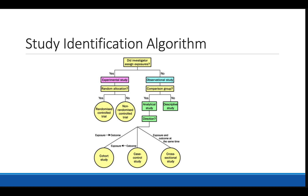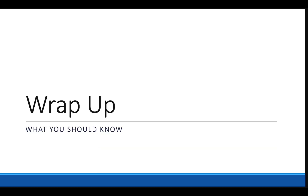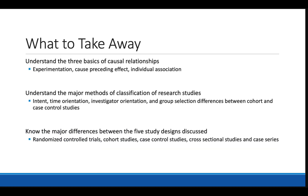A simple algorithm is provided to help determine which type of study design is employed in a particular research article. Key takeaways from today's lecture: you should understand the three basics of causal relationships — experimentation, cause preceding effect, and individual association. Understand the major methods of classification of research studies: intent, time orientation, investigator orientation, and group selection differences between cohort and case control studies. Finally, know the major differences between the five study designs discussed: randomized control trials, cohort studies, case control studies, cross-sectional studies, and case series.